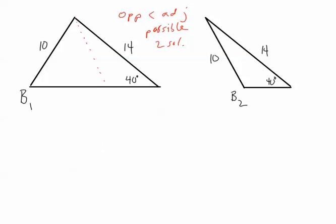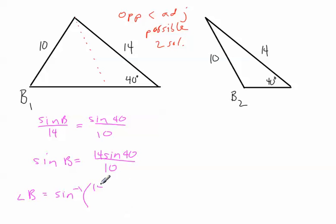So I'm going to go through and set this up. The sine of B over 14 is going to equal the sine of 40 over 10. After some cross-multiplying and dividing, I get 14 sine of 40 over 10. And so angle B, once I inverse that, 14 sine of 40 over 10 equals 64.1 degrees.